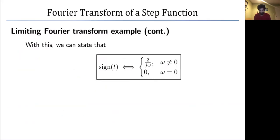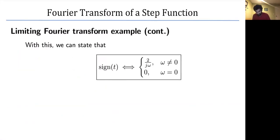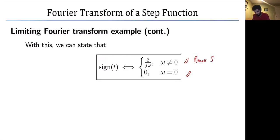Using these principles, the Fourier transform of the signum function is two over j omega for omega not equal to zero. When omega equals zero, we note that omega is the DC component — the average of the signum function — which is zero. So the DC component is zero.